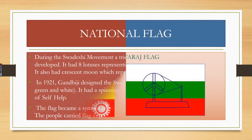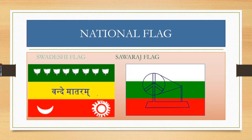During the Swadeshi movement in Bengal, a tricolor flag - red, green and yellow - was designed. It had eight lotuses representing the eight provinces of British India, and a crescent moon representing Hindus and Muslims. By 1921, Gandhiji designed a Swaraj flag which had white, red and green colors with a spinning wheel in the center, representing Gandhi's idea of self-help. Carrying this flag was an immense symbol of defiance against the British government.